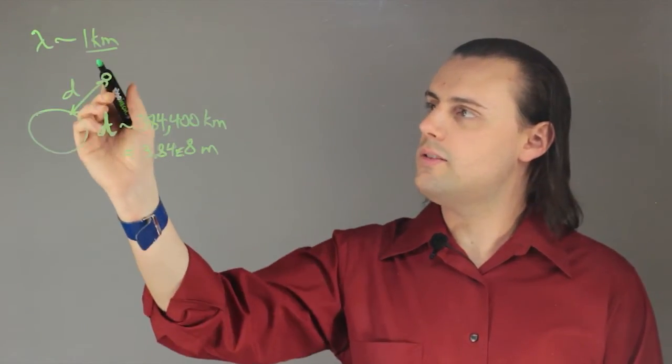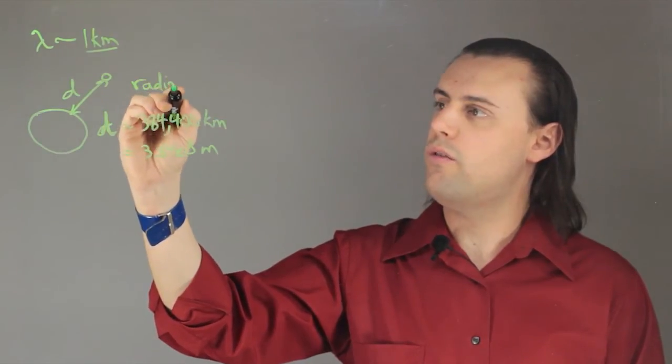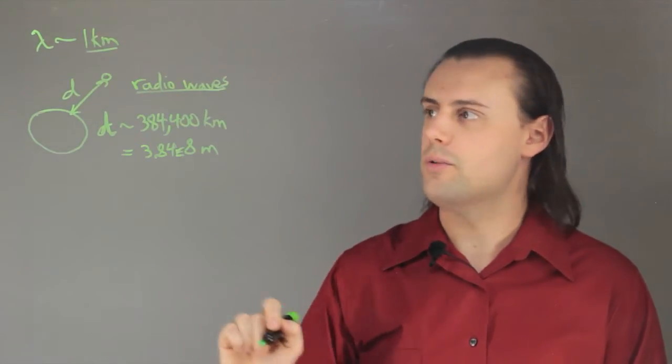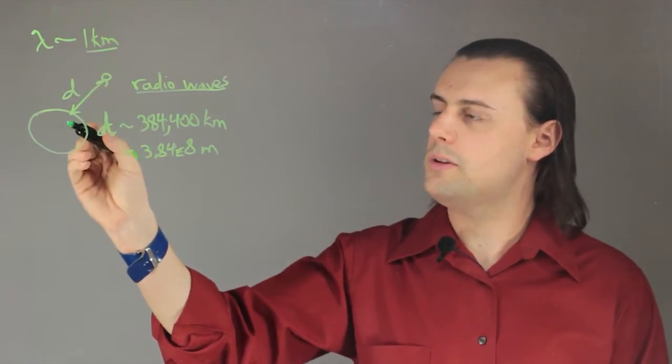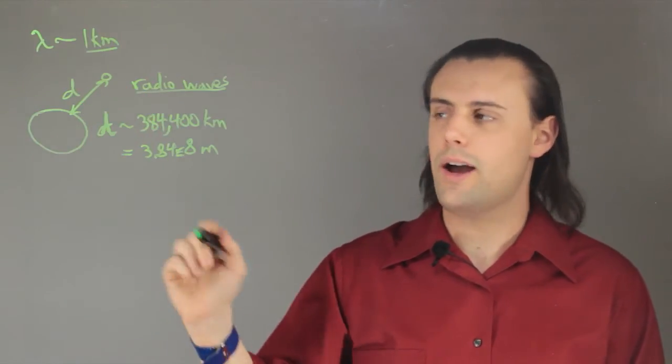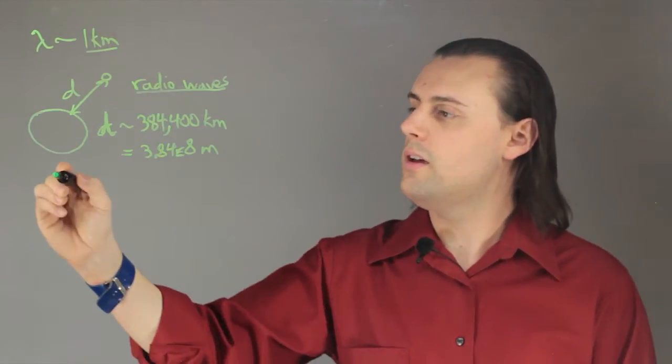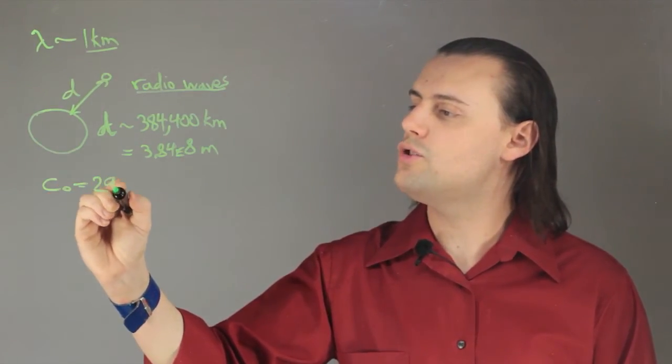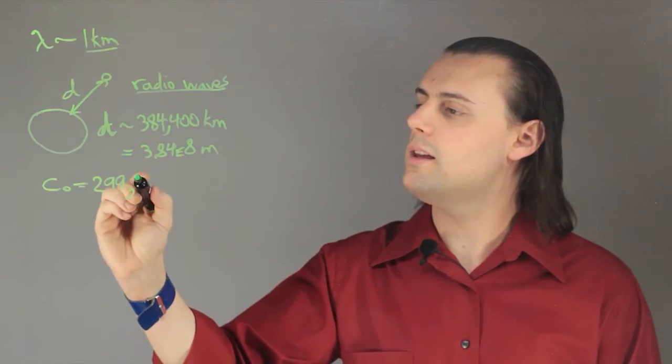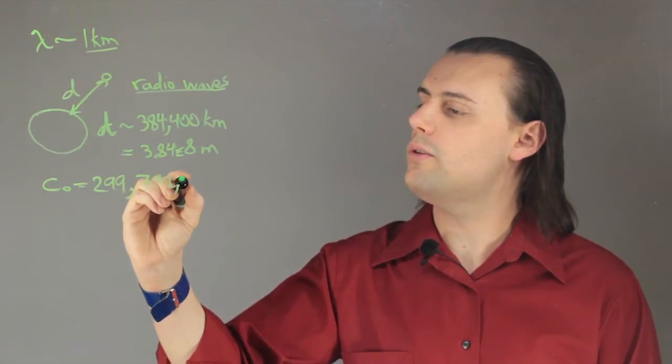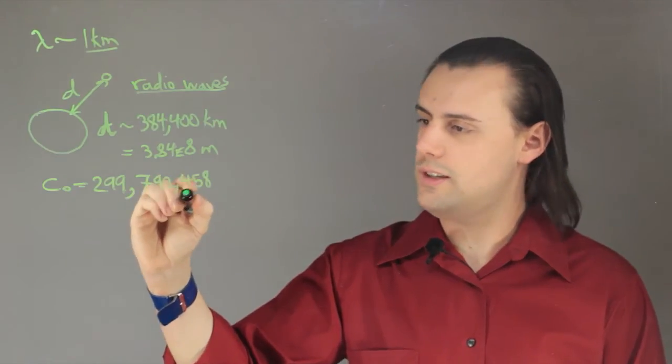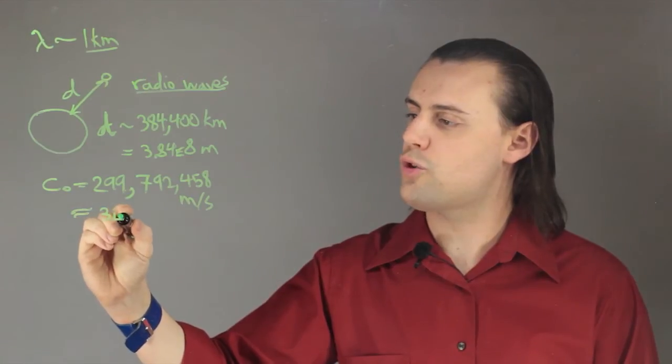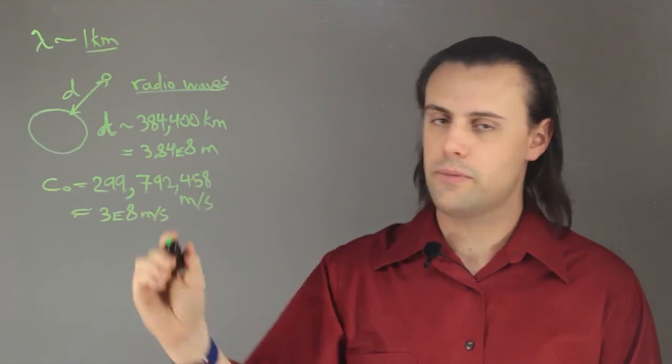And because radio waves are just one form of light, they travel at the speed of light in the vacuum. So if we approximate the space between the Earth and the Moon as being vacuum, meaning no particles, then the speed of light is equal to 299,792,458 meters per second, or just approximately 3 times 10 to the 8 meters per second.